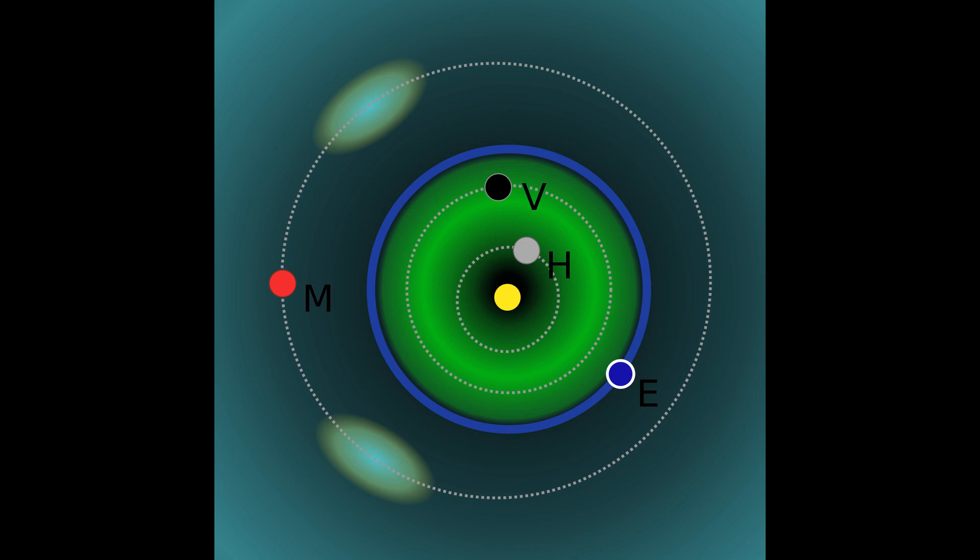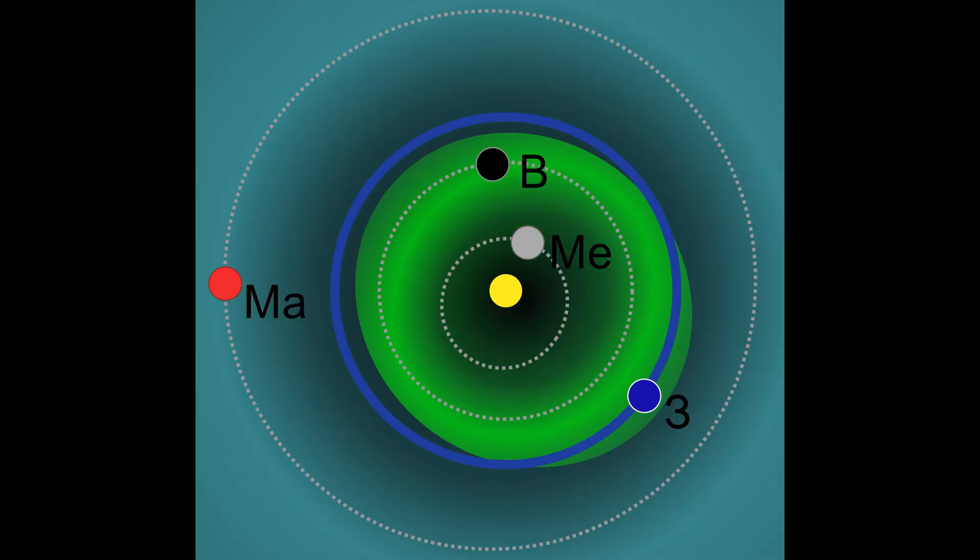The IAU stated that the term minor planet may still be used, but the term small solar system body will be preferred. However, for purposes of numbering and naming, the traditional distinction between minor planet and comet is still used.